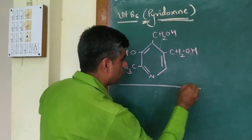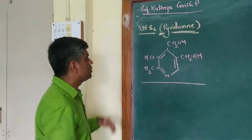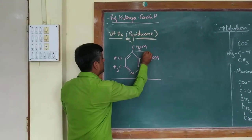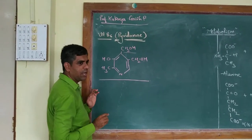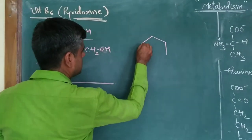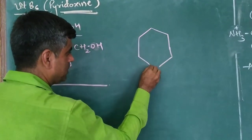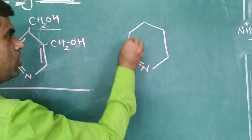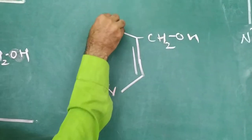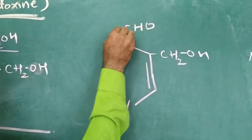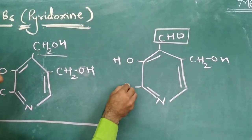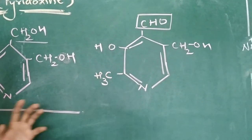The original form is pyridoxine. It has another form in which the hydroxymethyl group is converted into an aldehyde group — that form is pyridoxal. So pyridoxal has an aldehyde group in its structure. All these vitamins act as carriers of different cofactors.